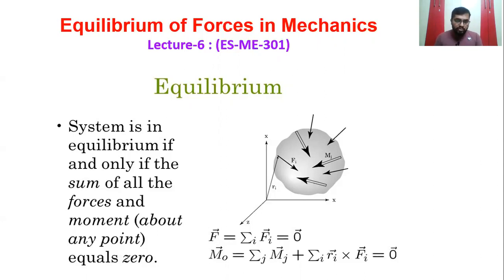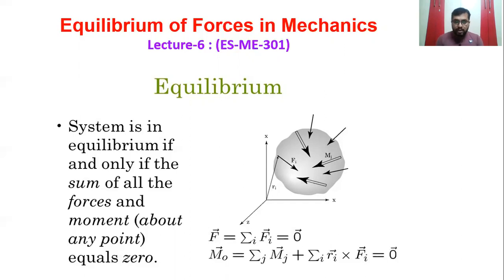When a force system acts on a physical body, we examine how static equilibrium is established. For equilibrium of a physical body under a force system, the effects of forces — including moments and couples — must sum to zero. The sum of all forces, moments, and couples together becomes zero. This is the first condition of equilibrium.